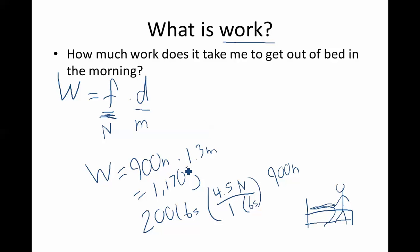So that's the usual term that we like to use when we're talking about work, but one newton meter is the same thing as one joule. So how much work does it take me to get out of bed in the morning? 1170 joules of work. Hope this helps. Have a beautiful day.